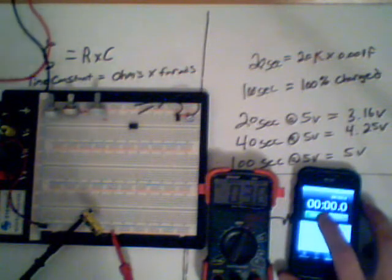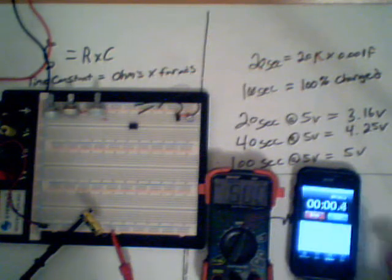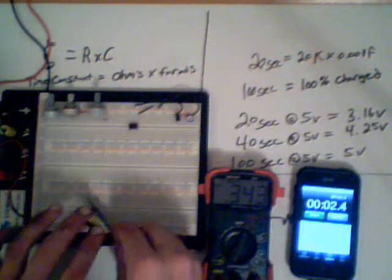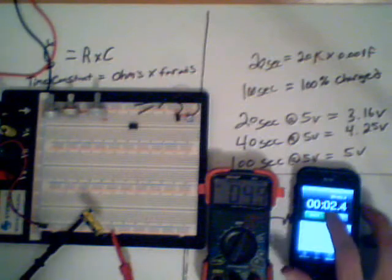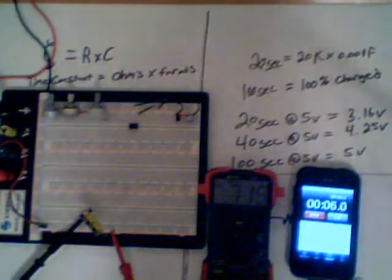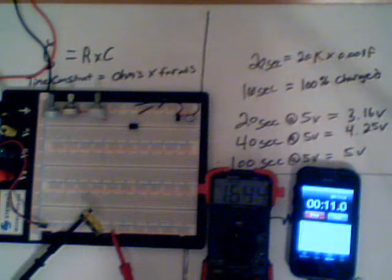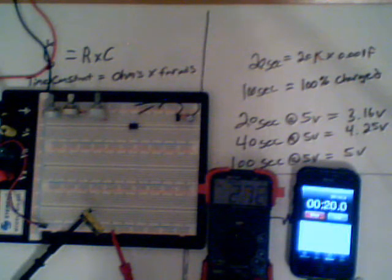And 1, 2, 3. And that was off. Discharge that again. 3, 2, 1. And at 20 seconds, we should have roughly 3.16 volts. We're at 10 now. We're at 1.5. 2. 2.5 at 18. And at 20 seconds, we were at 2.8.